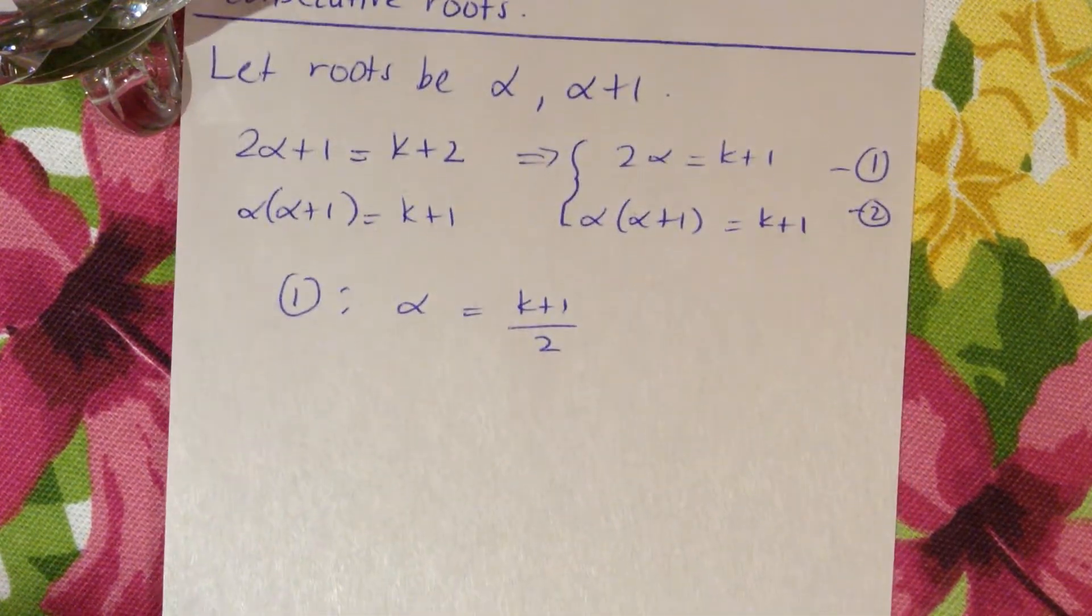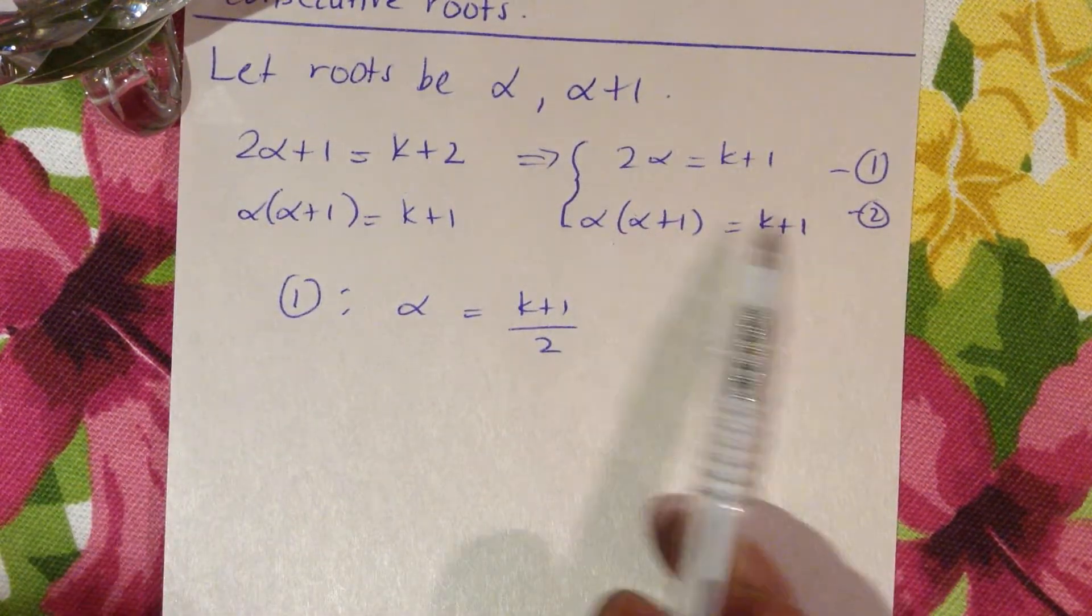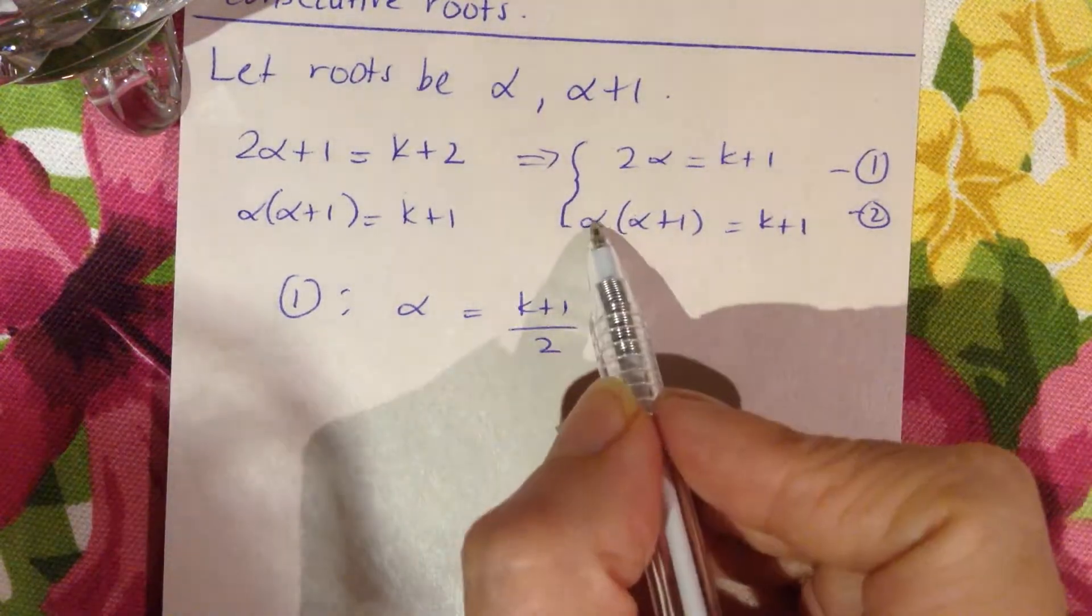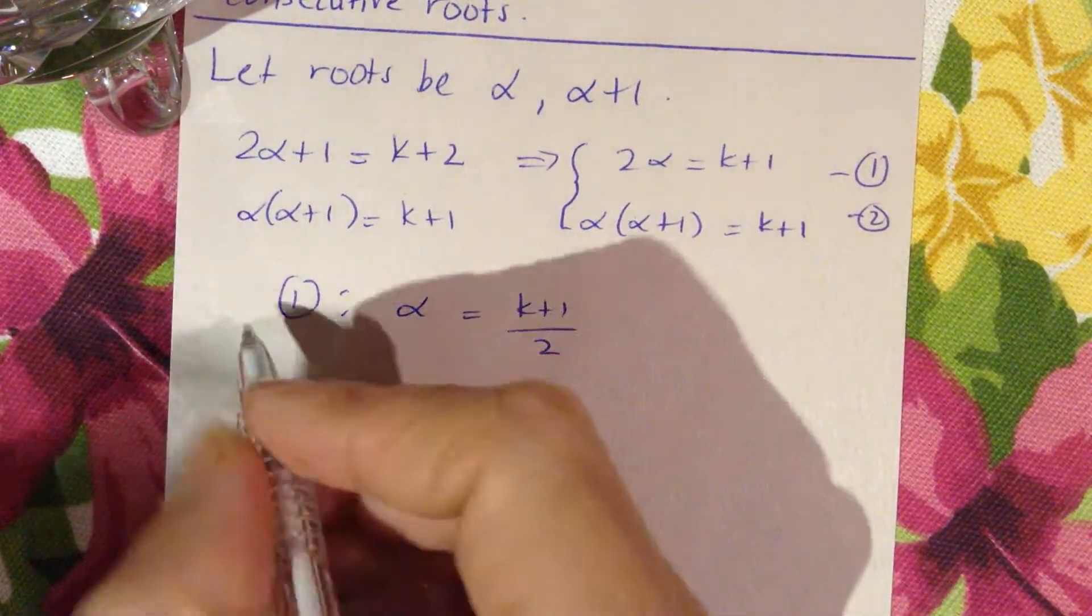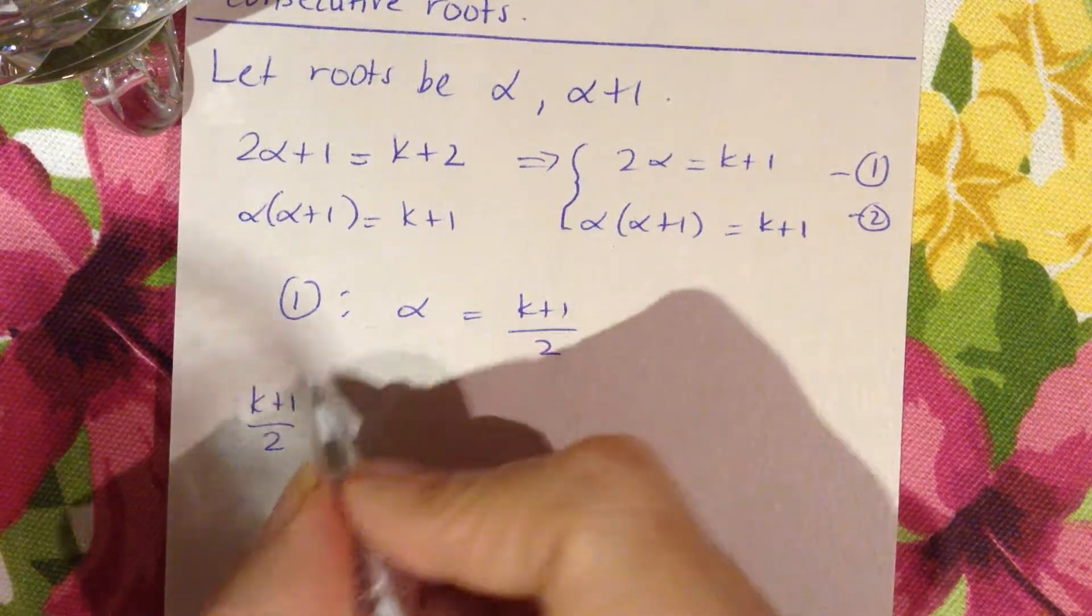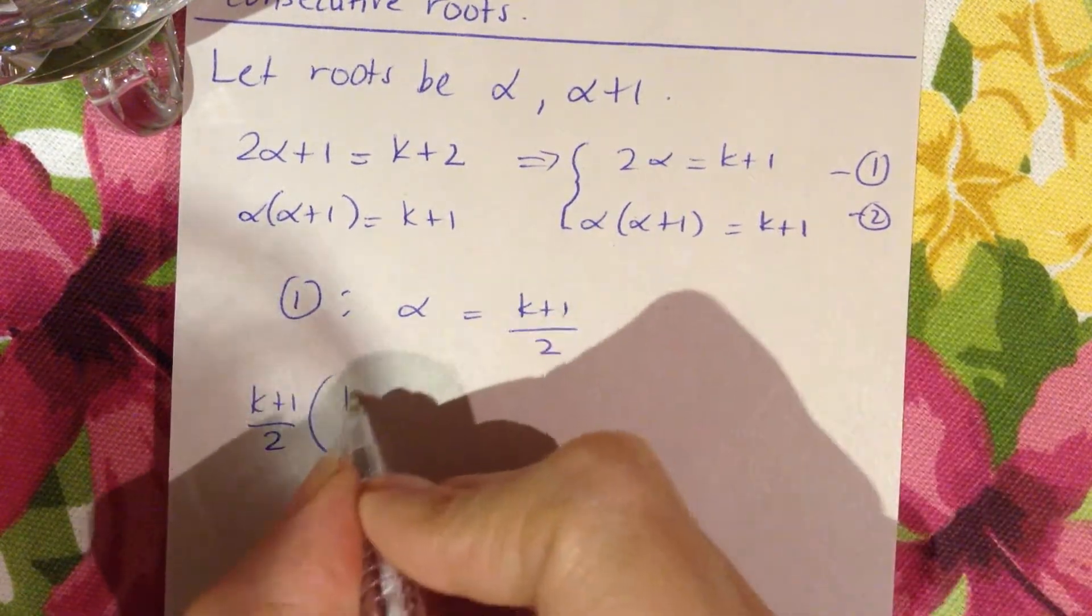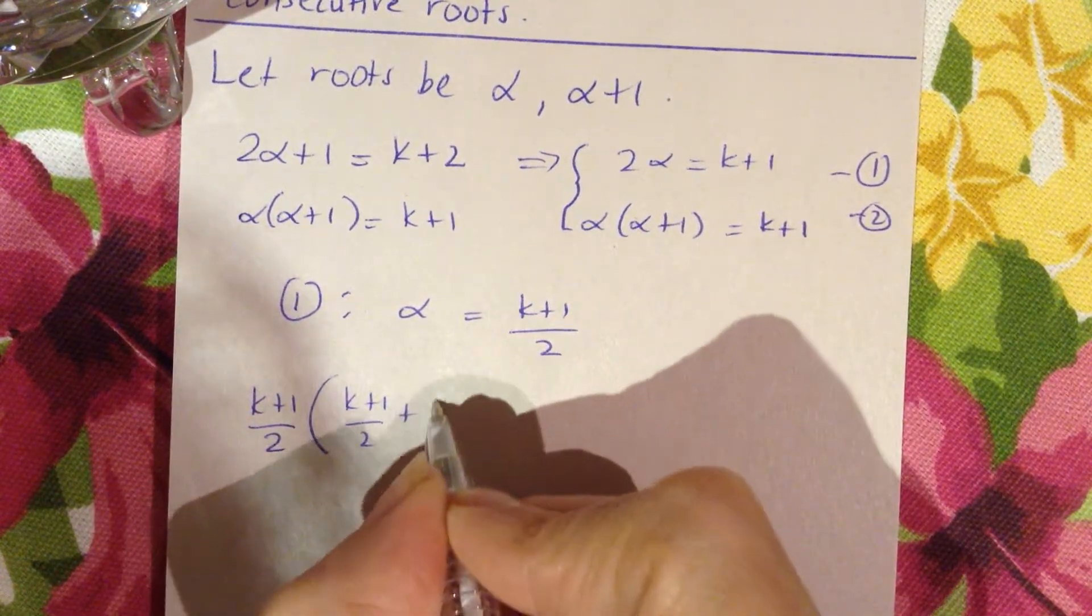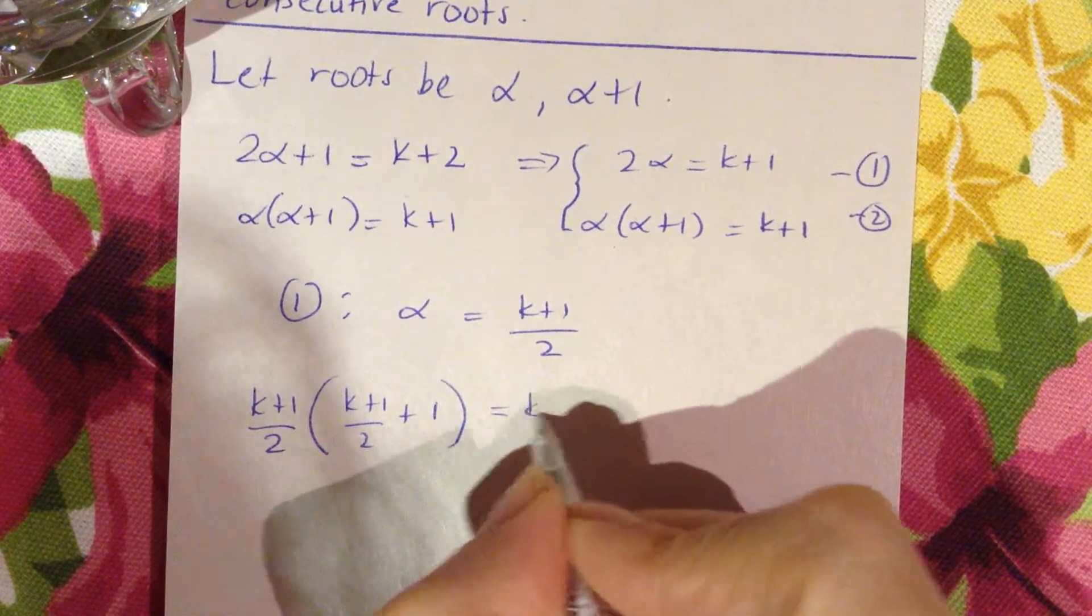We're going to substitute that into equation 2. So α is (k+1)/2, we write (k+1)/2 times ((k+1)/2 + 1) = k+1.